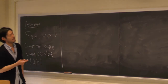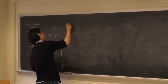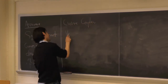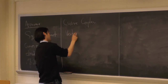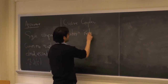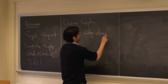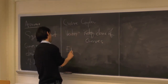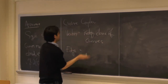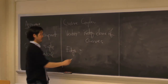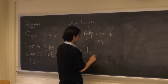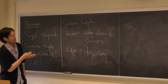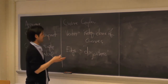So we can define the curve complex. The curve complex is due to Bill Harvey in the 70s. The vertex is the free isotopy class of curves. Edges are realized between two vertices if they are disjoint in the surface. This complex has higher dimension, but we always look at the one-skeleton, so this is enough.